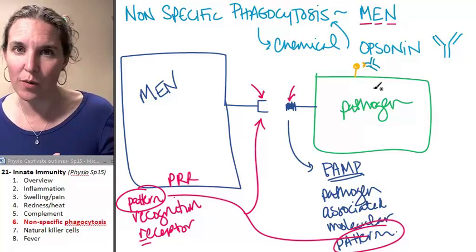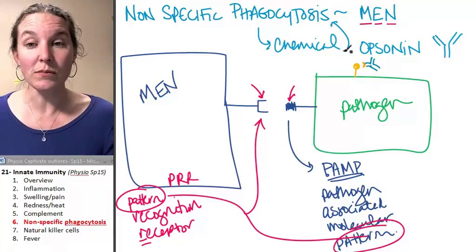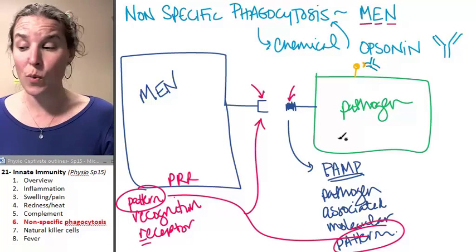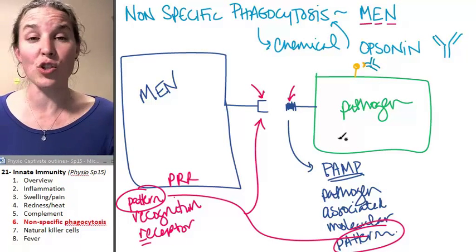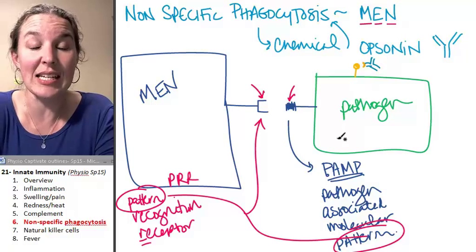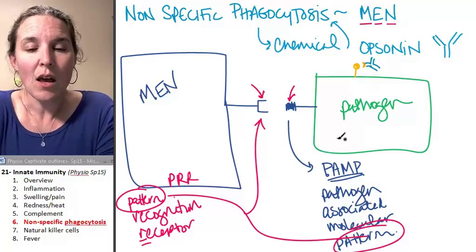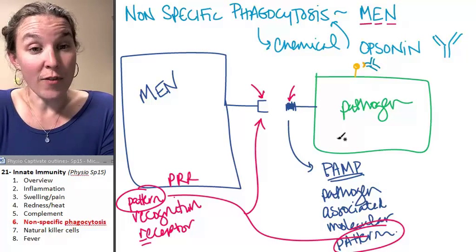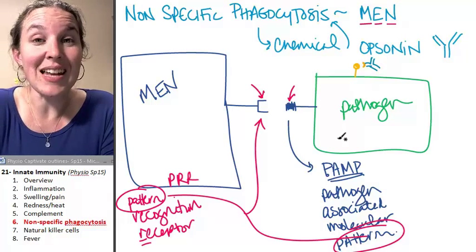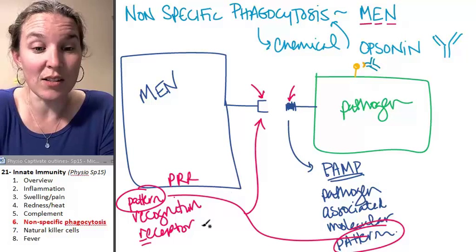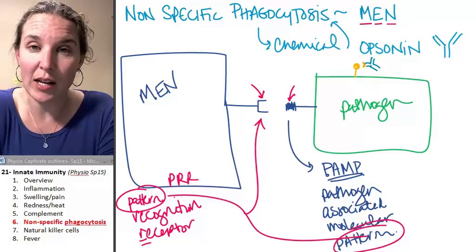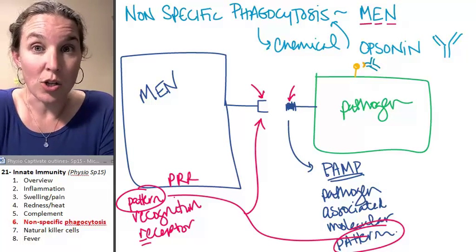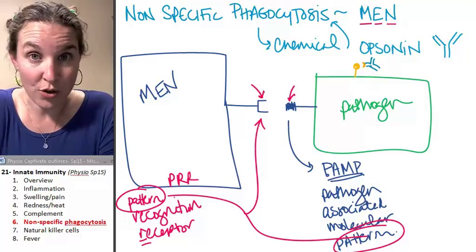Those are two ways that we can strategize to get things eaten. Now we're going to talk about our friends, the natural killers. They've got a whole other strategy — and I'm telling you right now, don't mess with the natural killers.